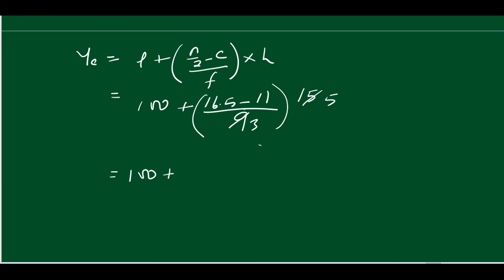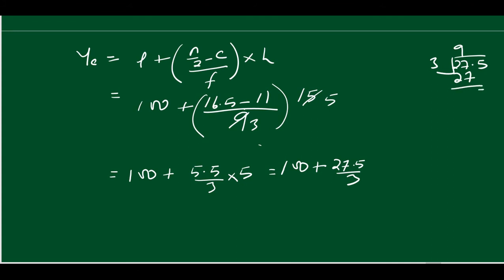So it is 100 plus (16.5 minus 11) equals 5.5, divided by 9, into 15 — that gives 27.5 divided by 9 equals approximately 9.16. So I get 100 plus 9.16 equals 109.16.